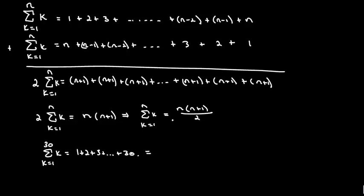I can just plug it into this formula. And my top value is 30. So what this is equal to is 30 times 30 plus 1 over 2, which is 30 times 31 over 2, which is 15 times 31. And unfortunately, I can't do that one in my head very quickly. So I'm going to grab my calculator. 15 times 31 is 465.